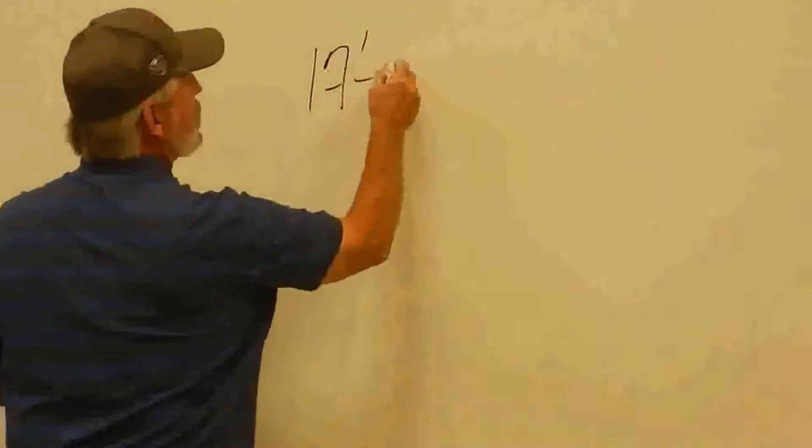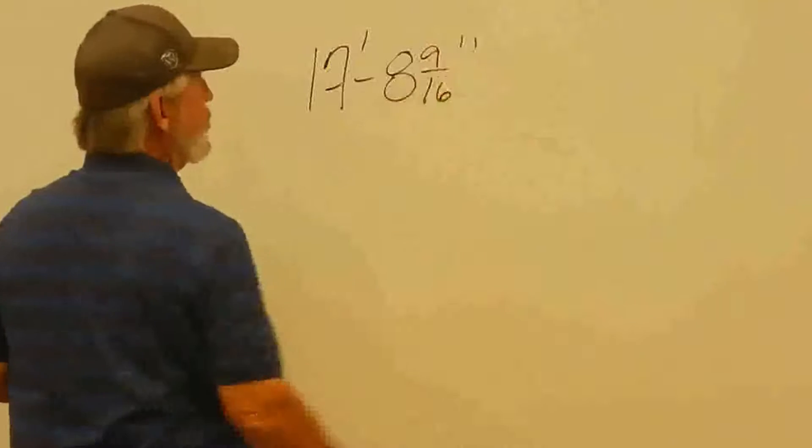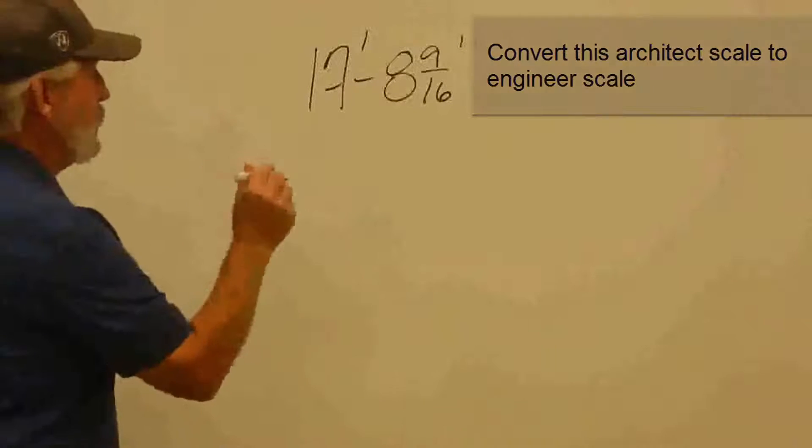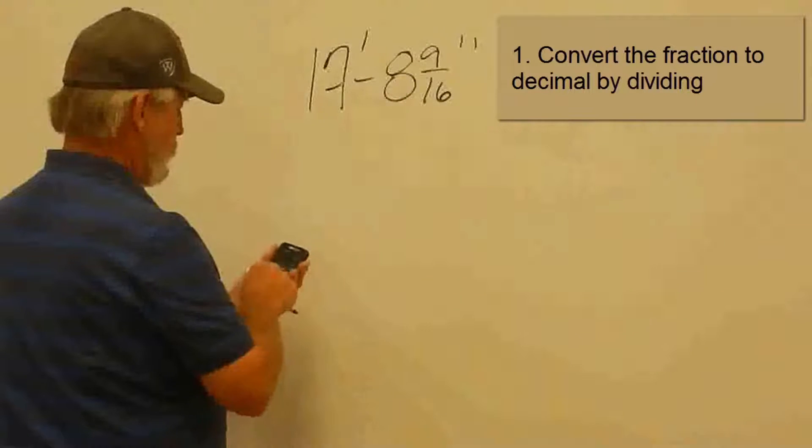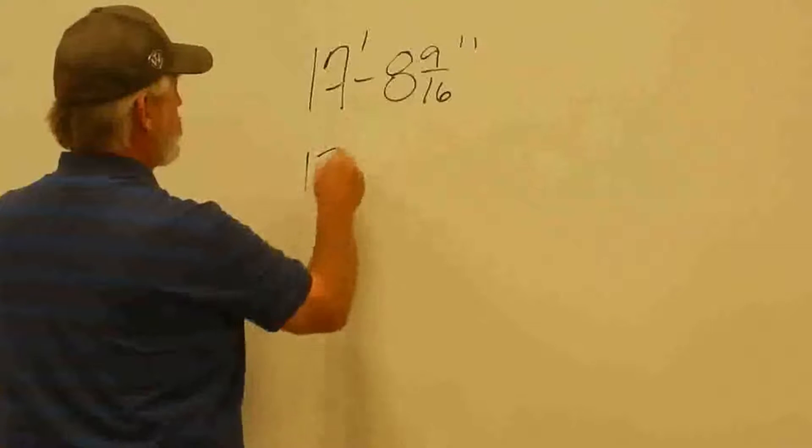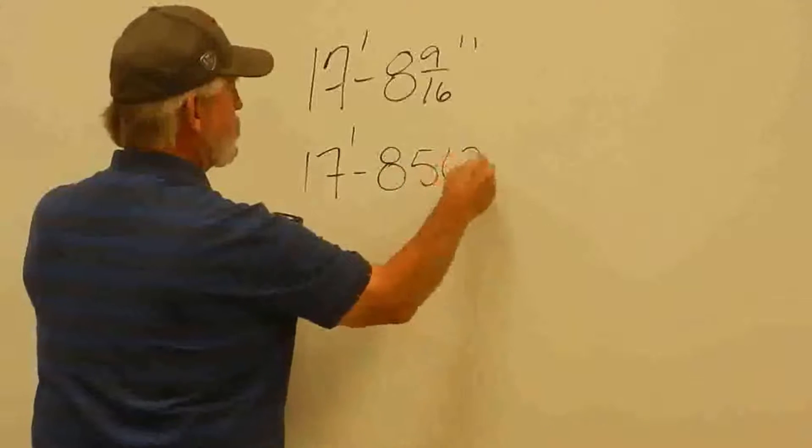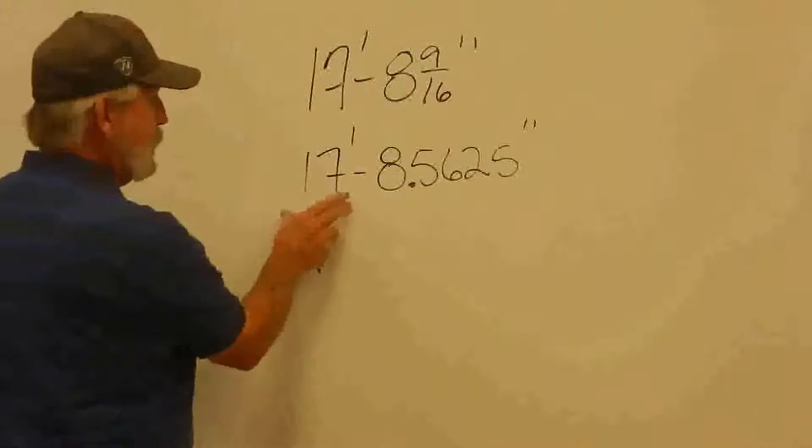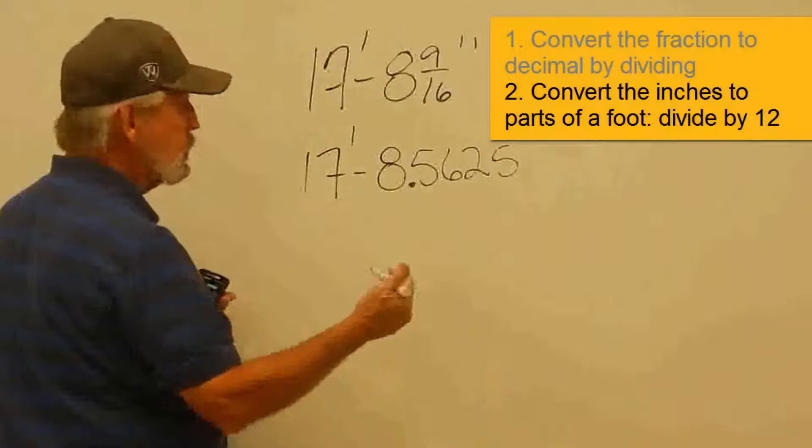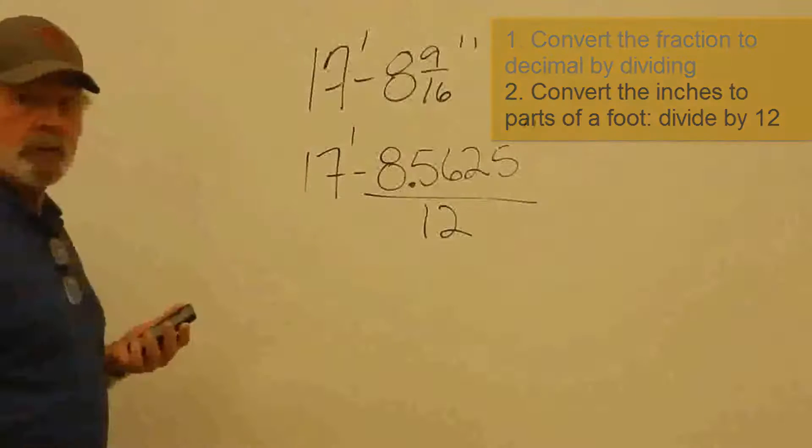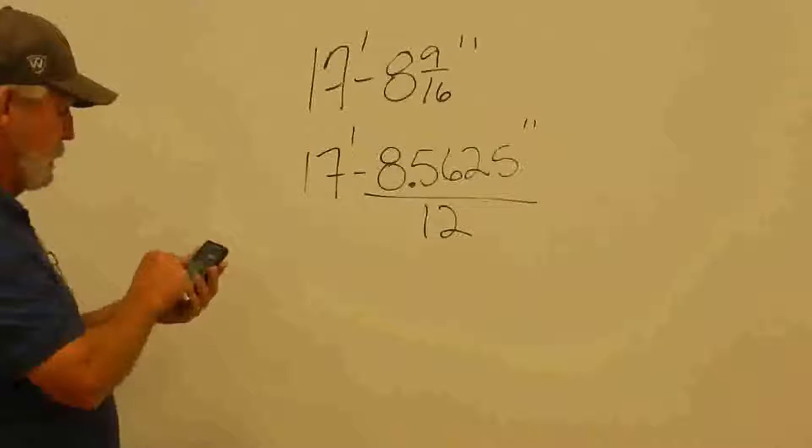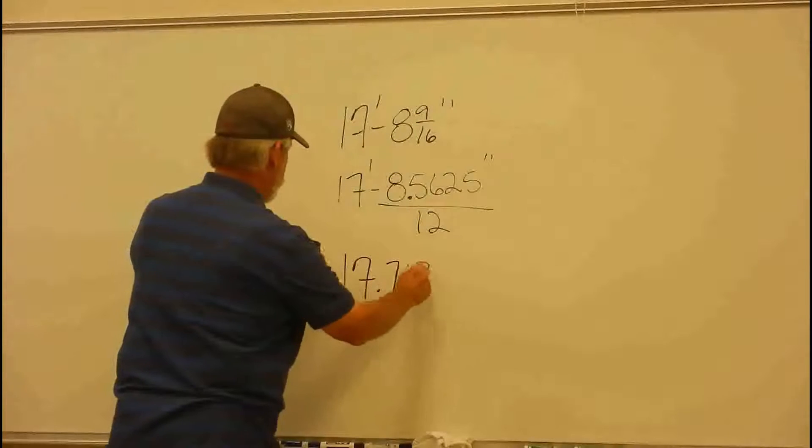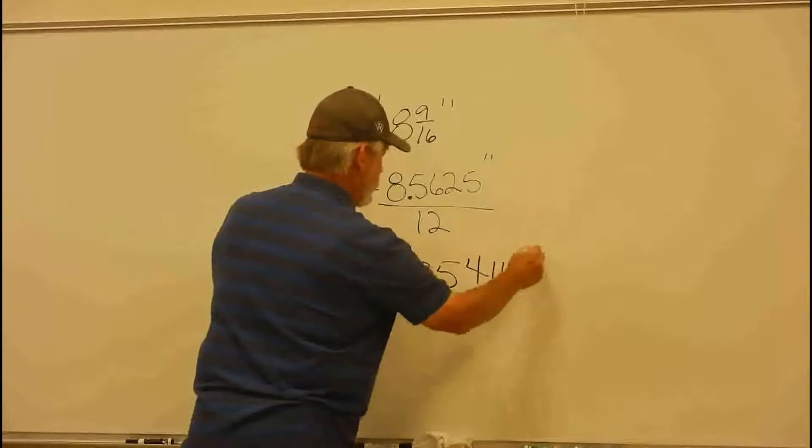We have 17 feet, 8 and 9 sixteenths inches. This is the full architectural scale. What I'm going to do is I'm going to convert this into the engineer scale. Step one is to take 9 divided by 16 and I've got 9 divided by 16 equals 17 feet, 8.5625 inches.